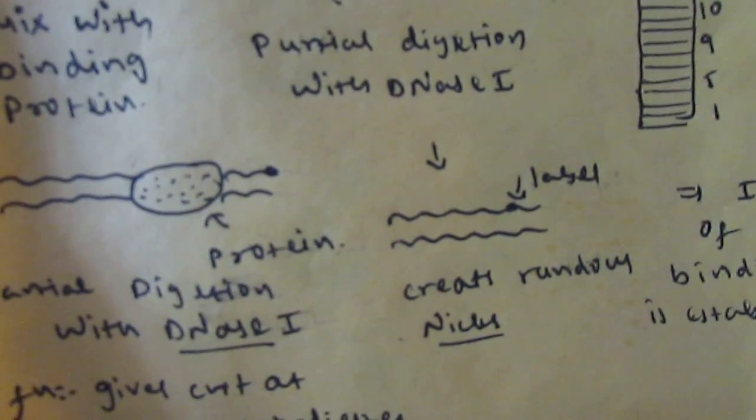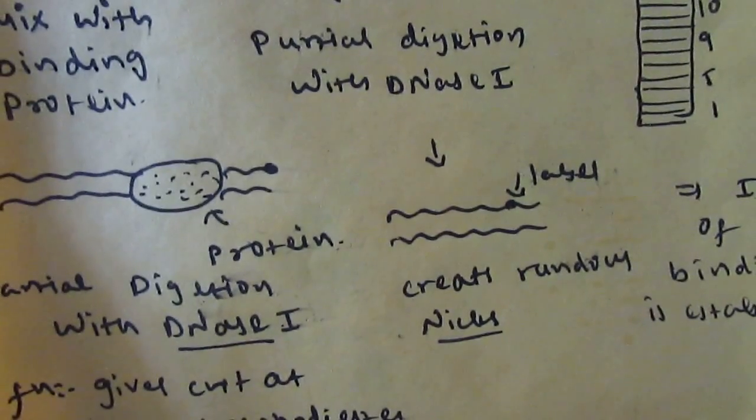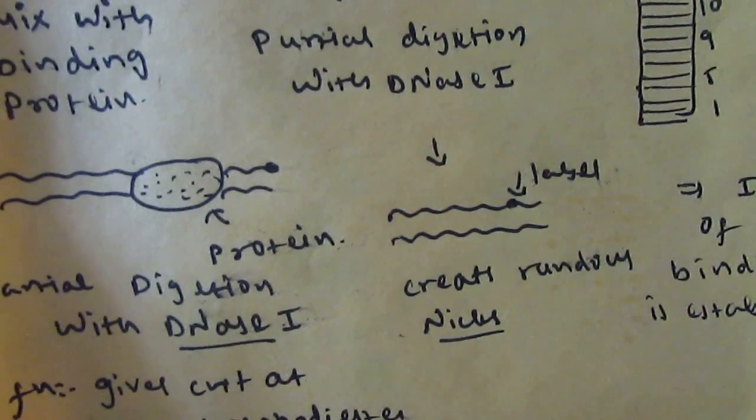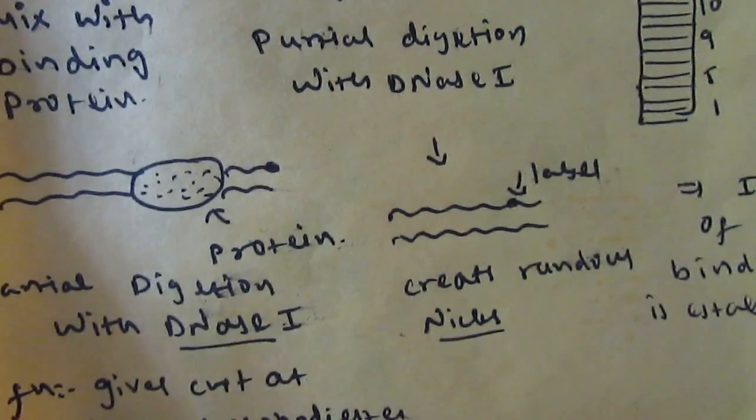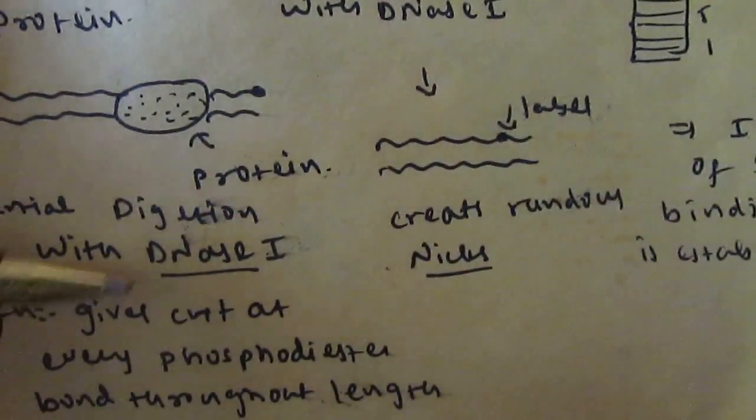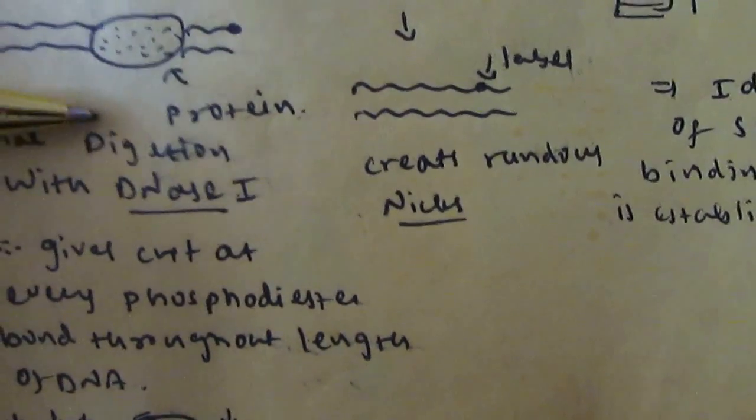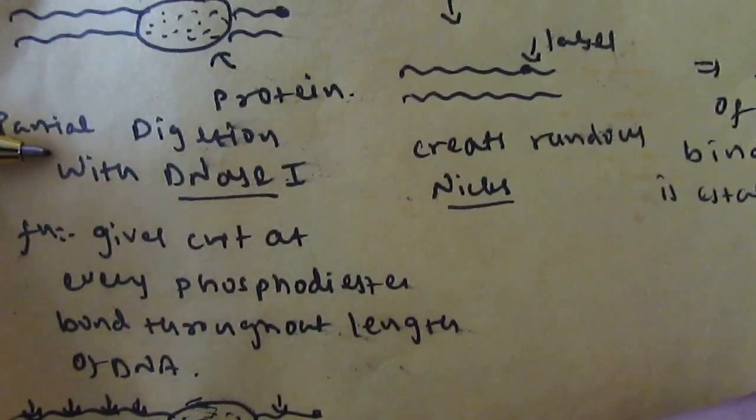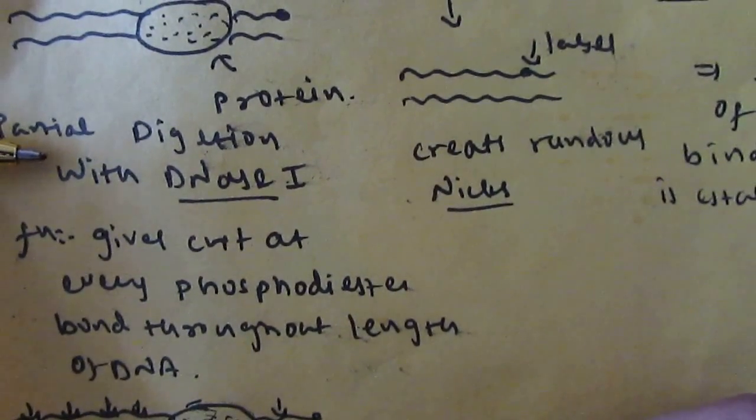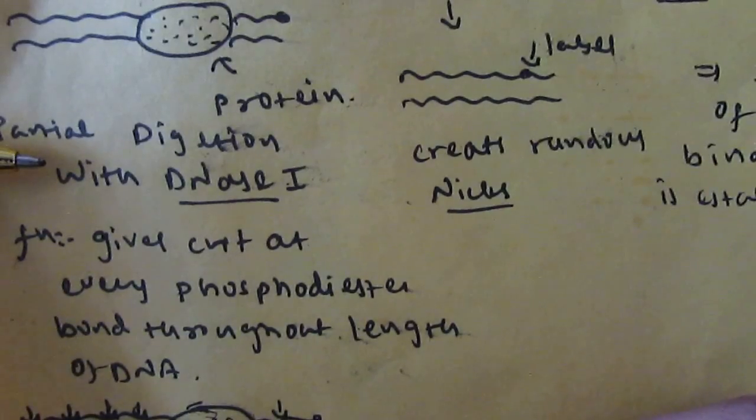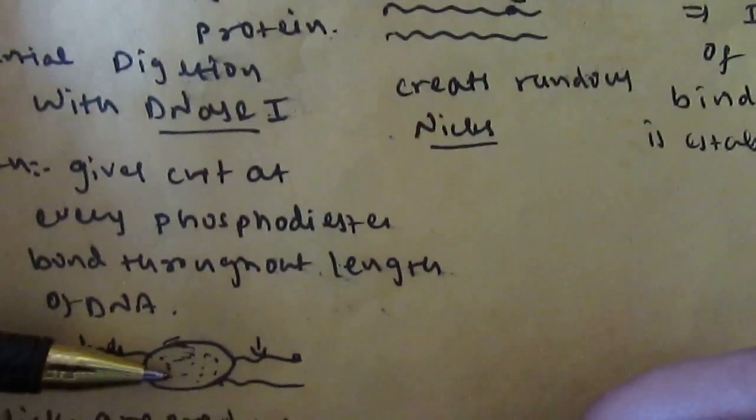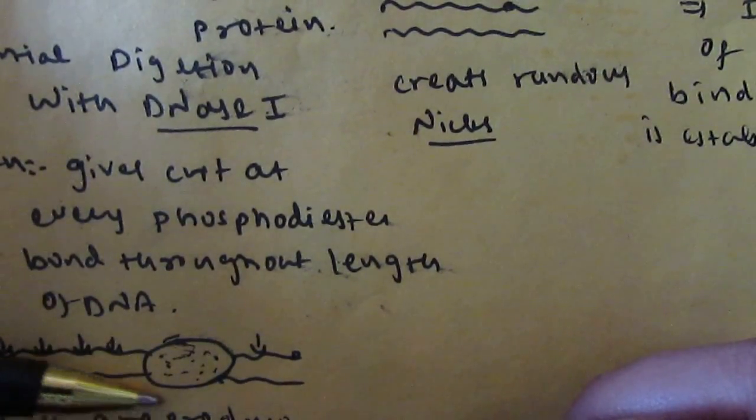If a protein molecule does not bind to the DNA molecule, it will give random nicks at every phosphodiester bond. However, at the portion where the protein molecule is present, DNase I cannot digest that portion of the DNA molecule at this particular location.